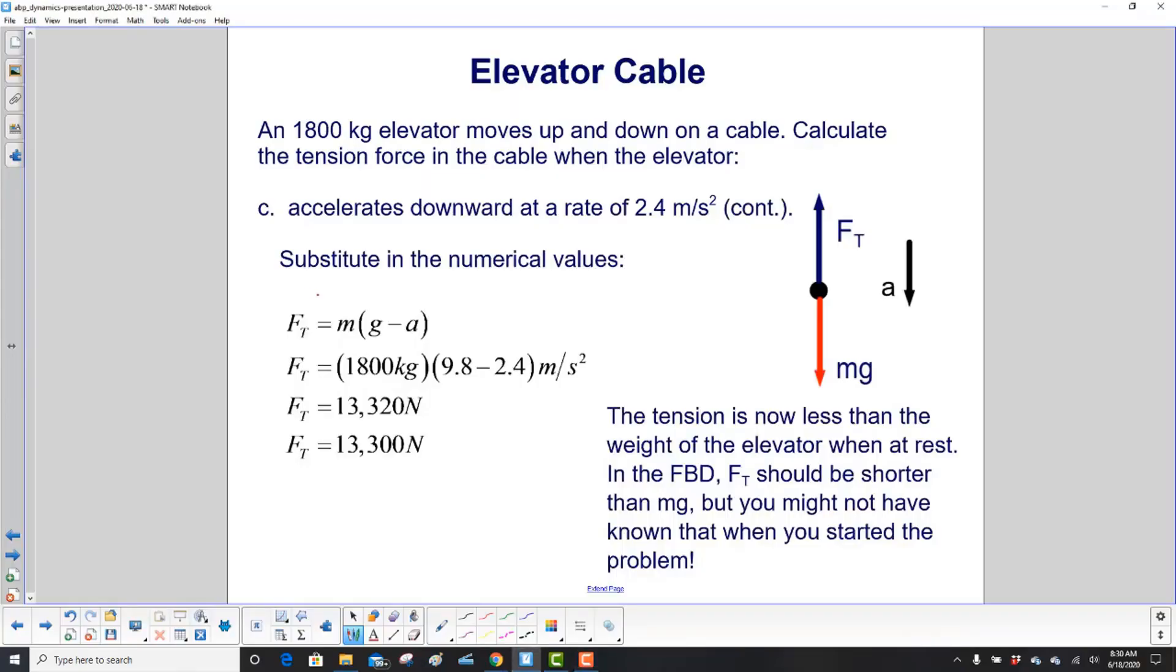Last step: put in the numbers. Here's our mass, gravitational acceleration, and acceleration in the down direction. Look at that - we're subtracting it this time. So this time our tension is 13,300 newtons. The tension is now less than the weight of the elevator at rest. So if we had drawn this perfectly correctly, we'd have tension smaller and mg greater. But again we didn't know that before we started solving the problem, and that's okay. The important thing is the directions and that we get the right answer for the tension force.